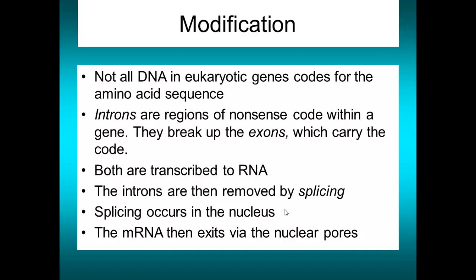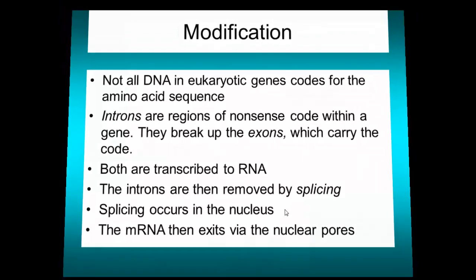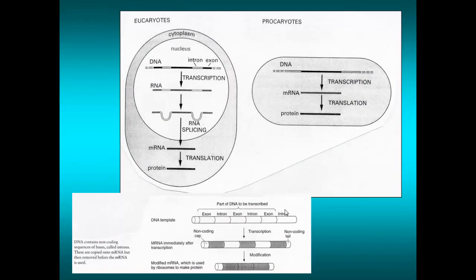The mRNA is not allowed to leave until splicing has occurred. Looking at a structural gene — a gene which codes for a protein — we have introns and exons alternating. After transcription we have RNA with exon, intron, exon, intron, exon. Those introns are spliced out, and then the RNA is allowed to leave the nucleus as mRNA.